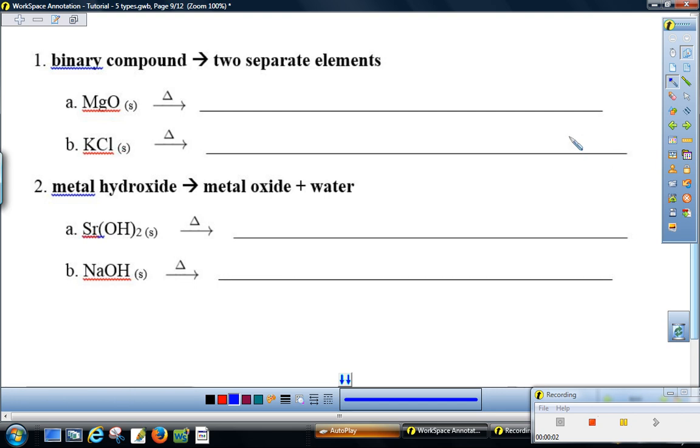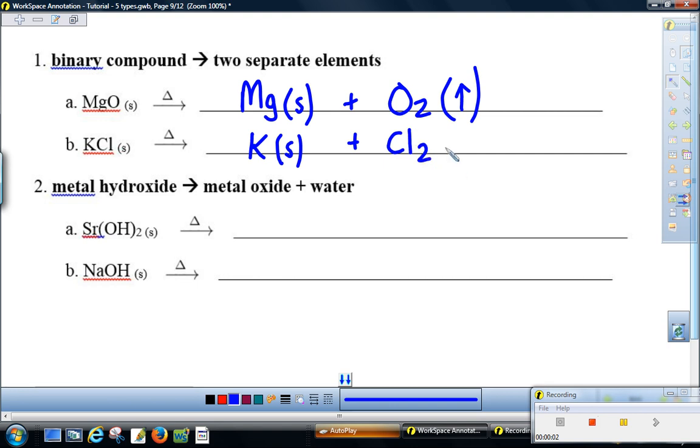Examples of decomposition reactions: If you have a binary compound, the only thing it can do when heated is separate. If it separates, we get magnesium metal and oxygen gas. Remember, oxygen is diatomic. If we're making a gas, we write an up arrow instead of writing G. Potassium chloride, KCl, will separate into potassium metal and chlorine gas, Cl2. Chlorine is another diatomic element. To balance that, we need two, two.